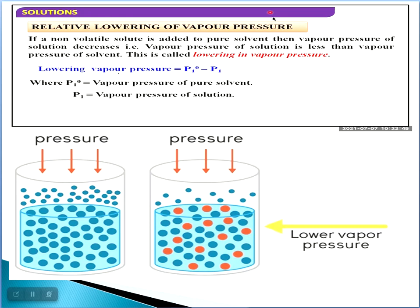Number one: relative lowering of vapor pressure. As the name suggests, there is some loss of vapor pressure happening. This is because a non-volatile solute is added to a solvent, so its vapor pressure will decrease. We have to find the difference between the pure solvent and the solution — that difference is the relative lowering of vapor pressure.